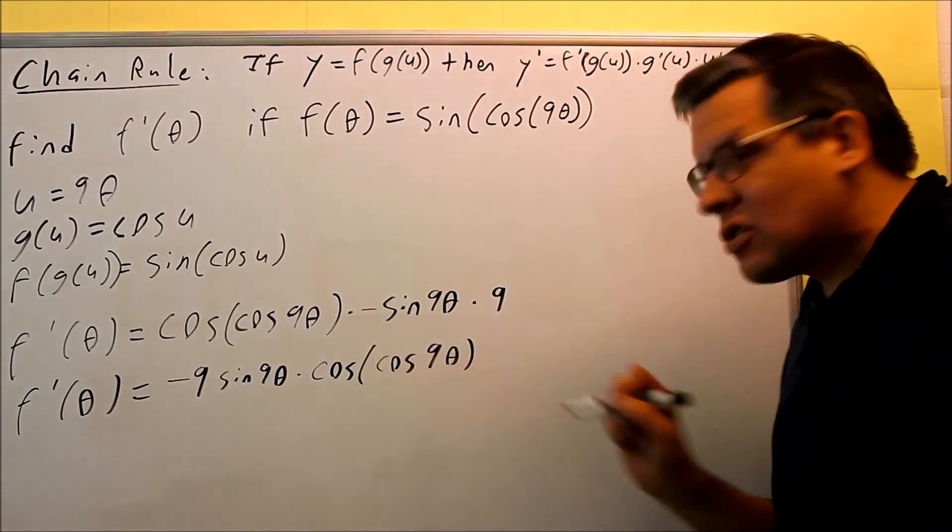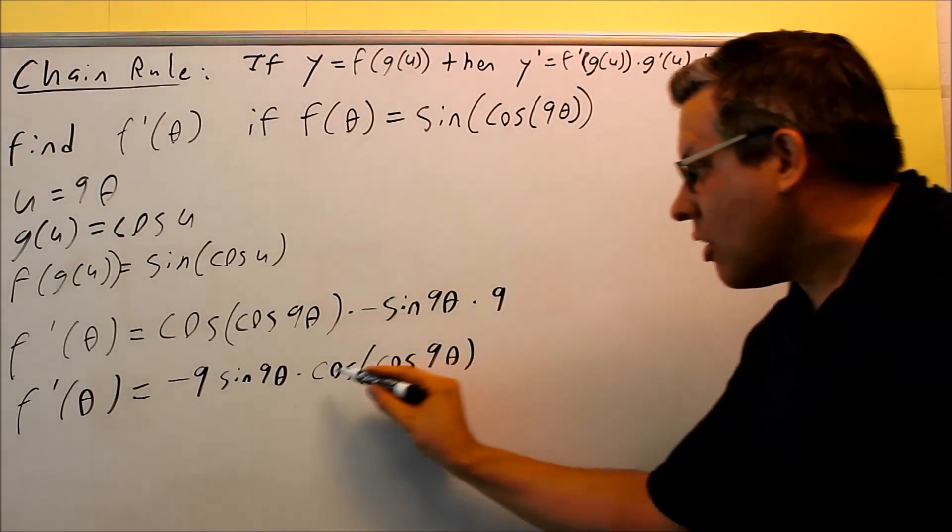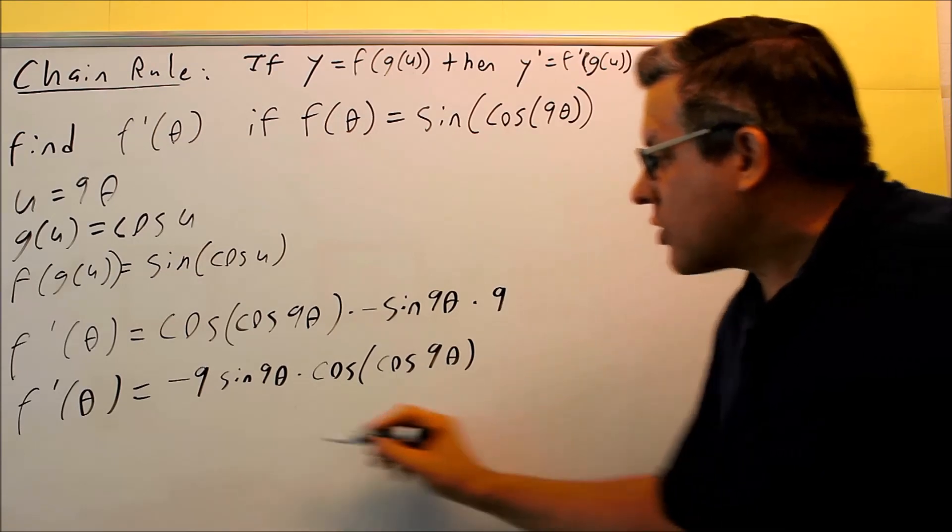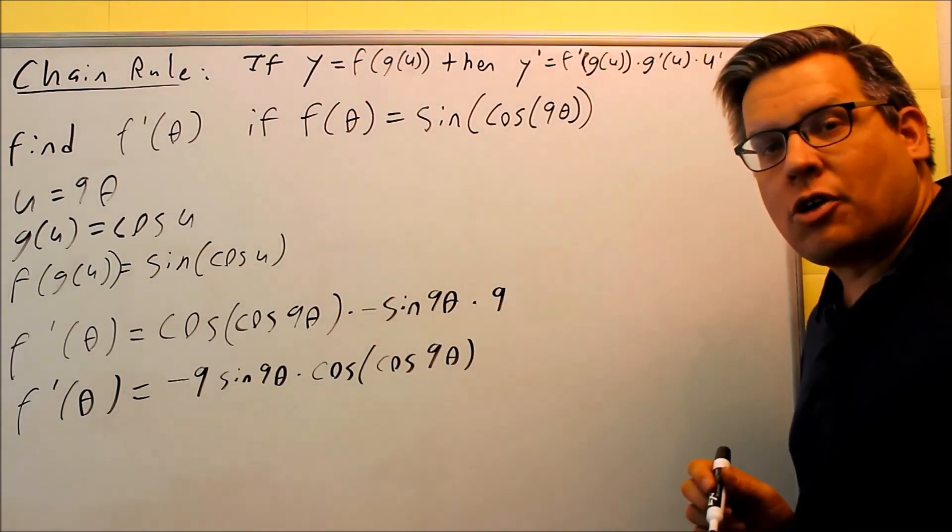Again, be careful you don't write this as cosine squared. It's not. It's cosine of cosine that you have on this particular one. So this is your final answer. That's as far as we can go with our answer.